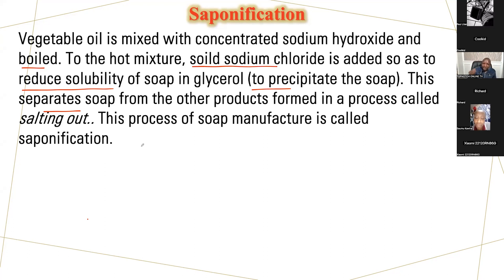The substance added is solid sodium chloride. Its role is to reduce the solubility of soap in glycerol, and the name of that process is salting out. The addition of sodium chloride can be tested in three ways: what is added, what is the role of it, and what is the name of that process.